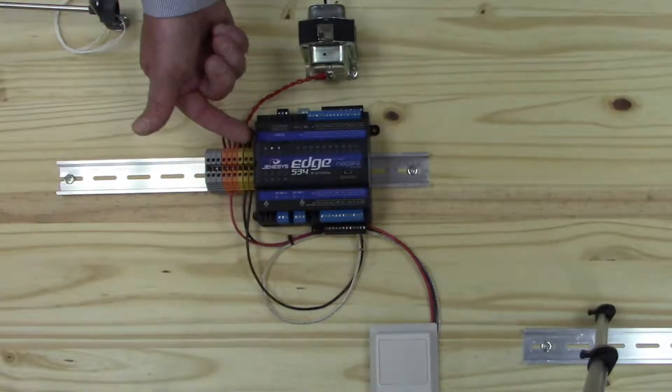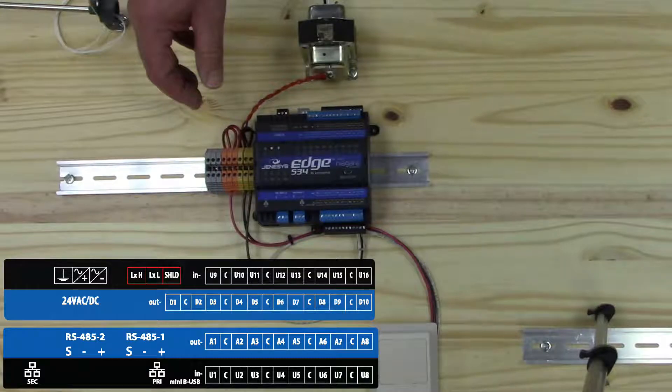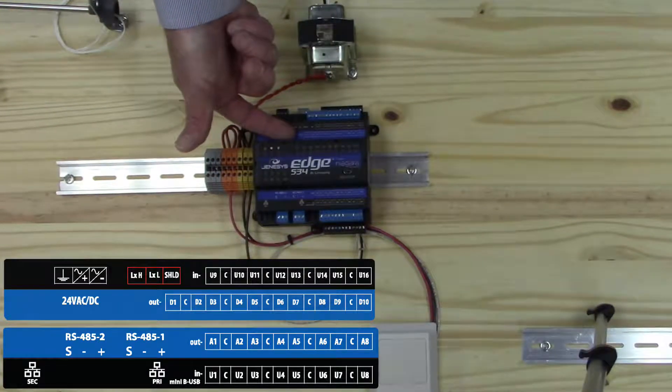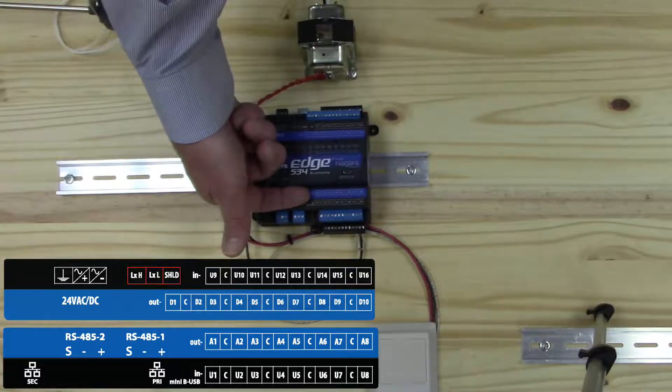On the Edge 534 there are two layers of inputs and outputs. The top layer represented by blue here and blue here are our digital outputs by relays, and our analog outputs.